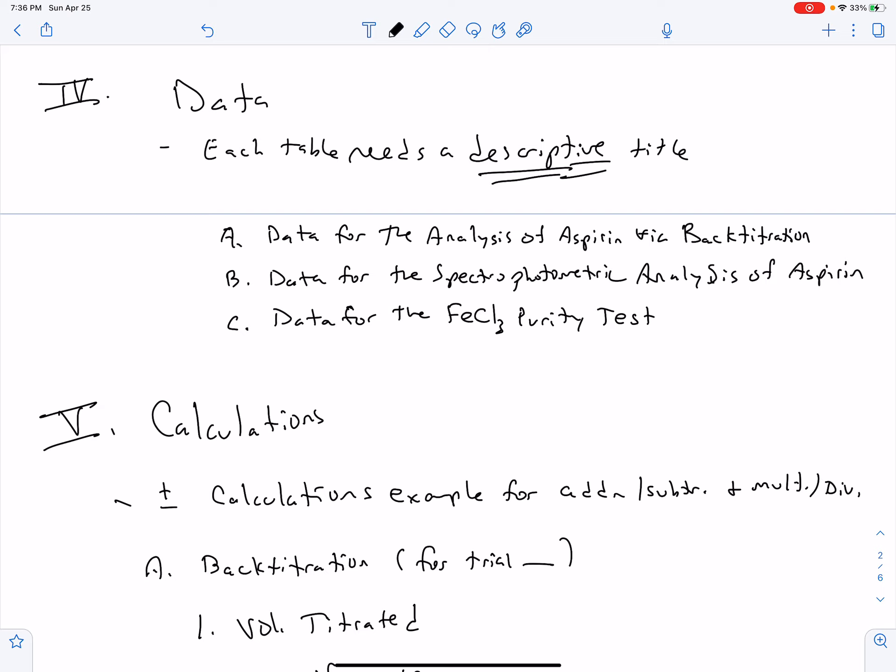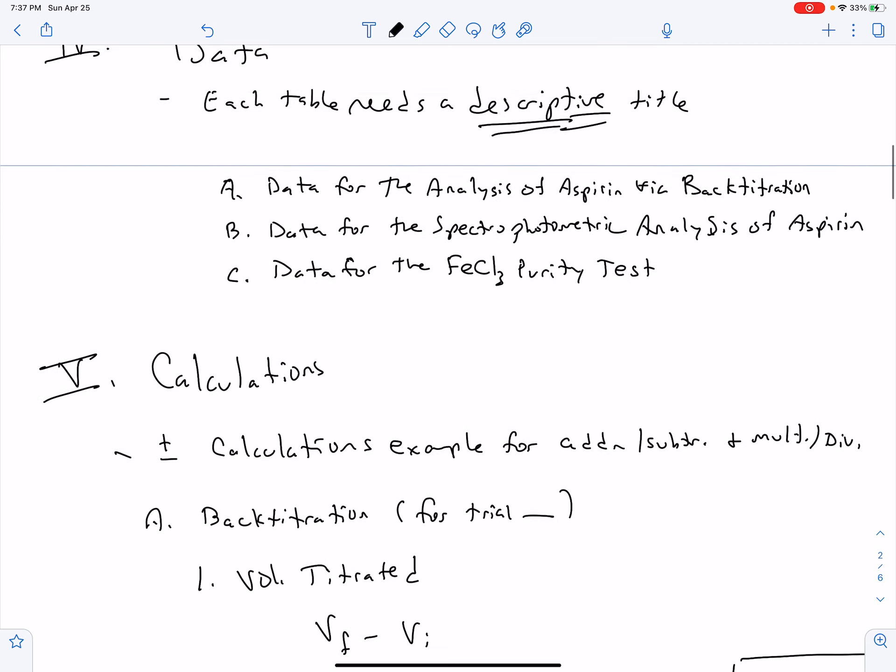Then we had our spectrophotometric analysis. This is where we have those solutions A through E and the unknown. We have the concentration, the absorbance. So there was a data table there where you collected the absorbance. Underneath it you had three other pieces of data: the amount of aspirin in the unknown, the accepted value, and the percent error. So keep that in mind because that also will need to be submitted, as well as the data for the ferric chloride purity test. This will all be qualitative, so the observations that you made.